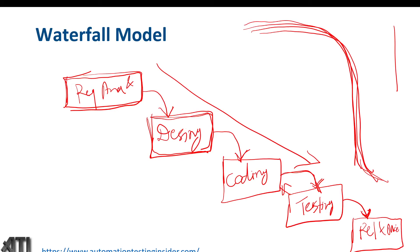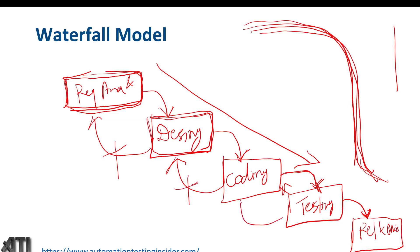We cannot come back once the phases are done. Suppose requirement and feasibility study are done and we've jumped to the next phase - we cannot come back and change the requirement. Similarly, we cannot go back from implementation to design, or ask developers to start new testing for new functionalities. This is useful for smaller projects. It is the oldest and traditional model, also called the basic model.